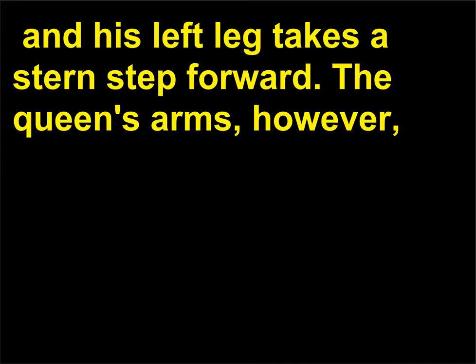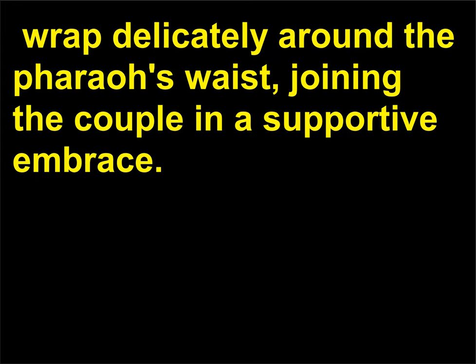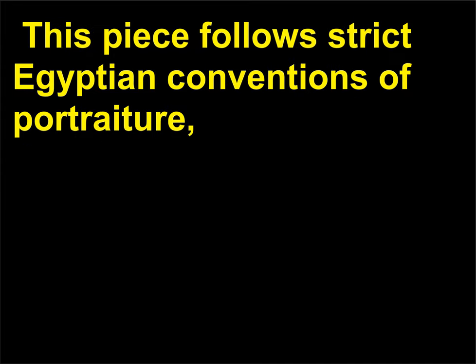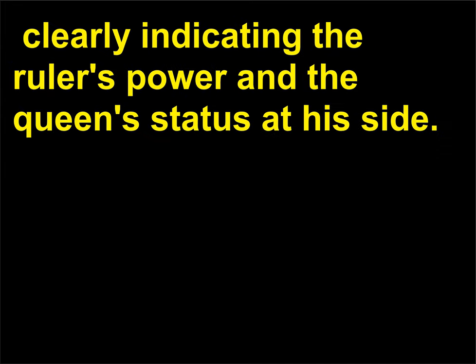The queen's arms, however, are wrapped delicately around the pharaoh's waist, joining the couple in a supportive embrace. This piece follows strict Egyptian conventions of portraiture, clearly indicating the ruler's power and the queen's status at his side.